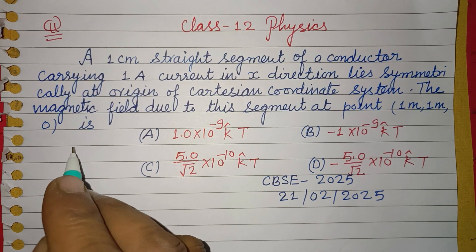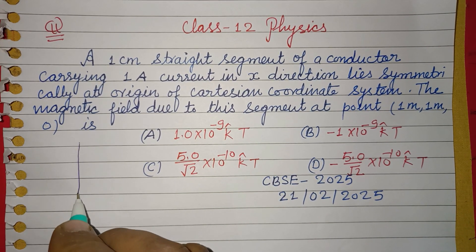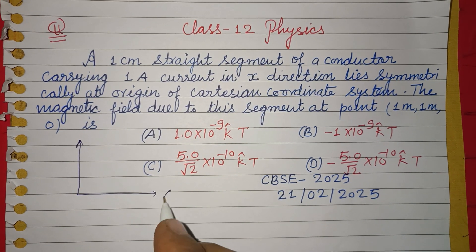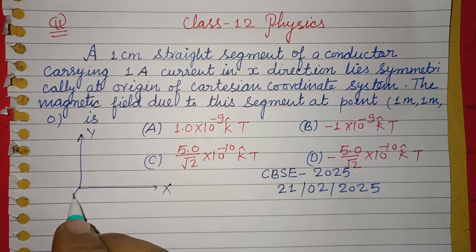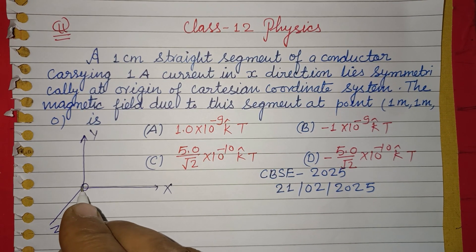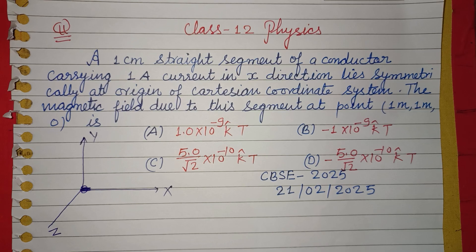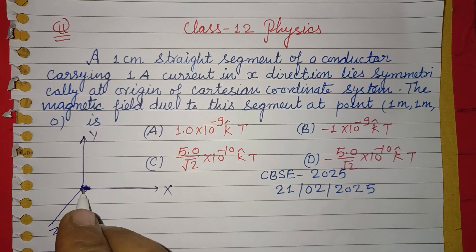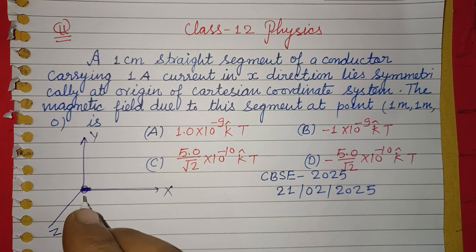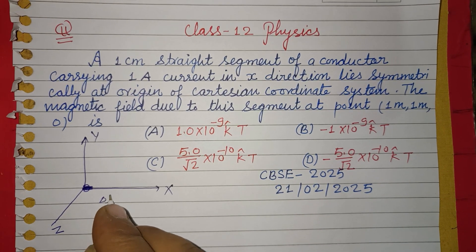So students, first we make the figure: a Cartesian plane with x, y, z directions. Here at origin is a straight line segment, a small conductor.